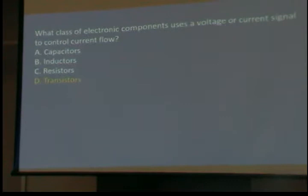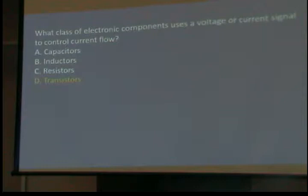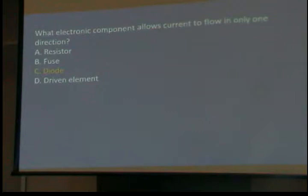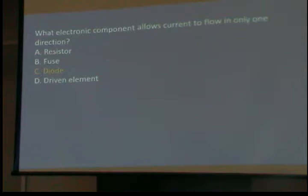What class of electronic components uses a voltage or current signal to control current flow? You take a small current and alter the flow of a big current — sort of like a handle on a valve, like a relay. It's called a transistor. All a transistor does is have one lead where you change the voltage or current, and the flow going through the other side changes. What electronic component allows current to flow in only one direction? A diode. The AC coming out of the wall, electronics don't like — you've got to reduce the voltage and change it into DC that flows in only one direction, which is what the diode does.